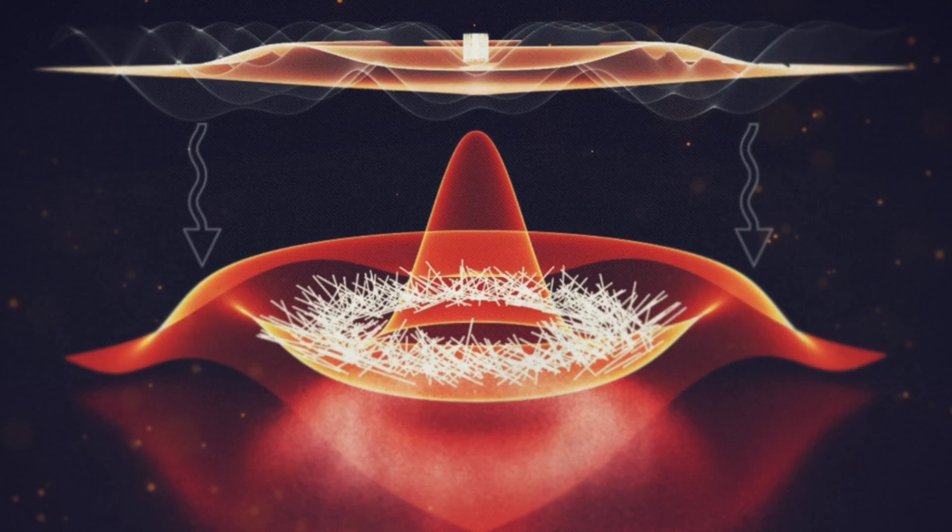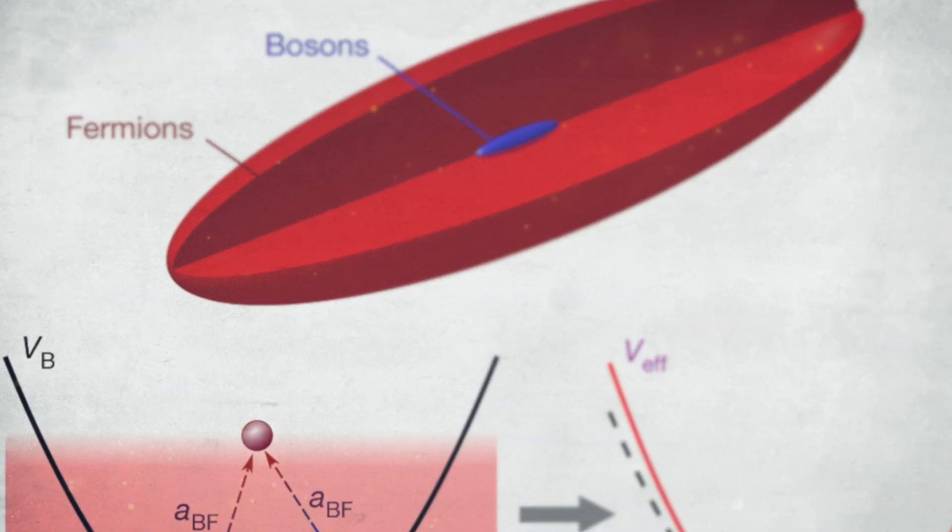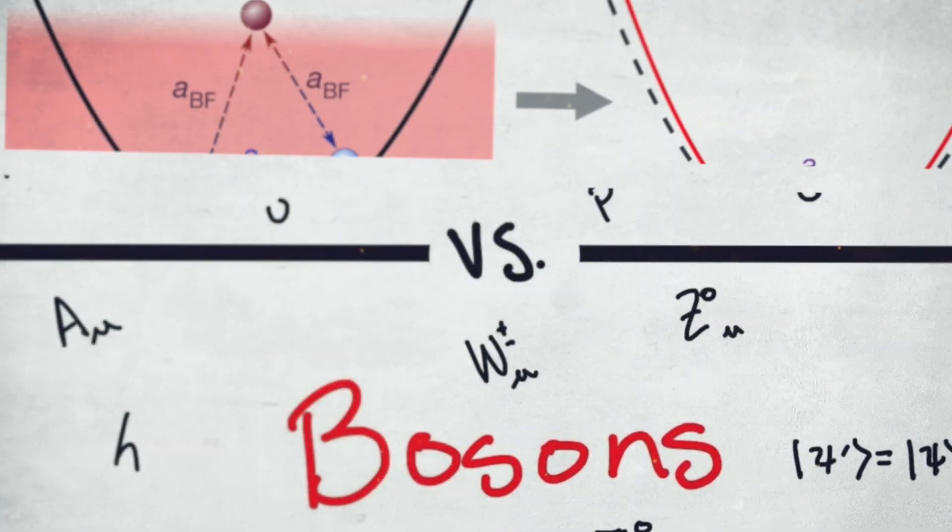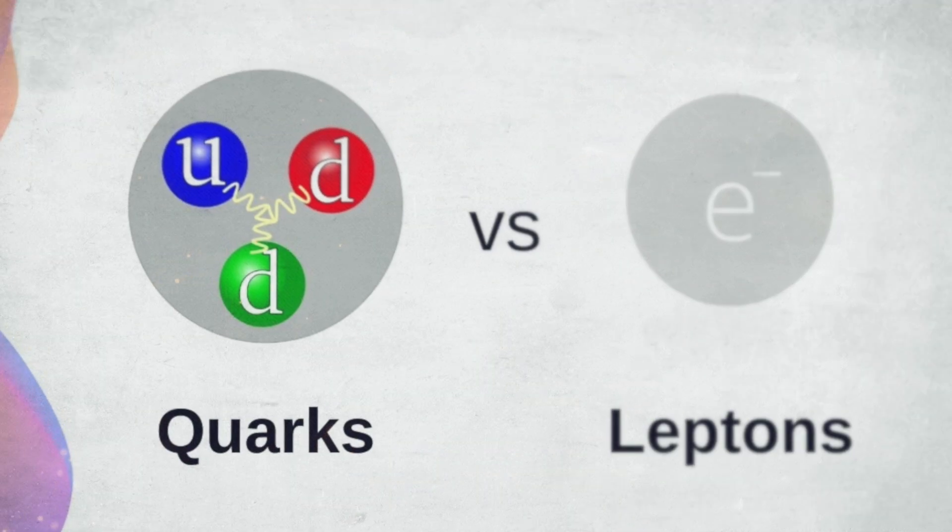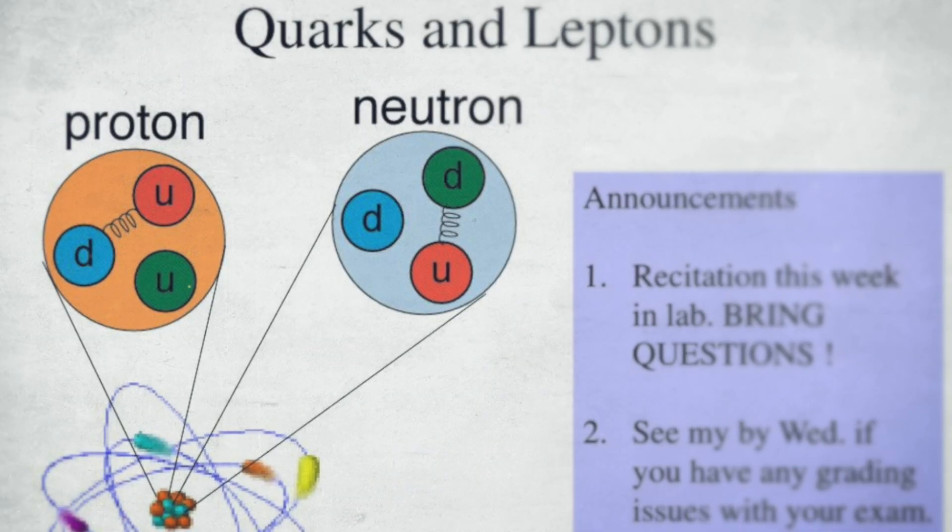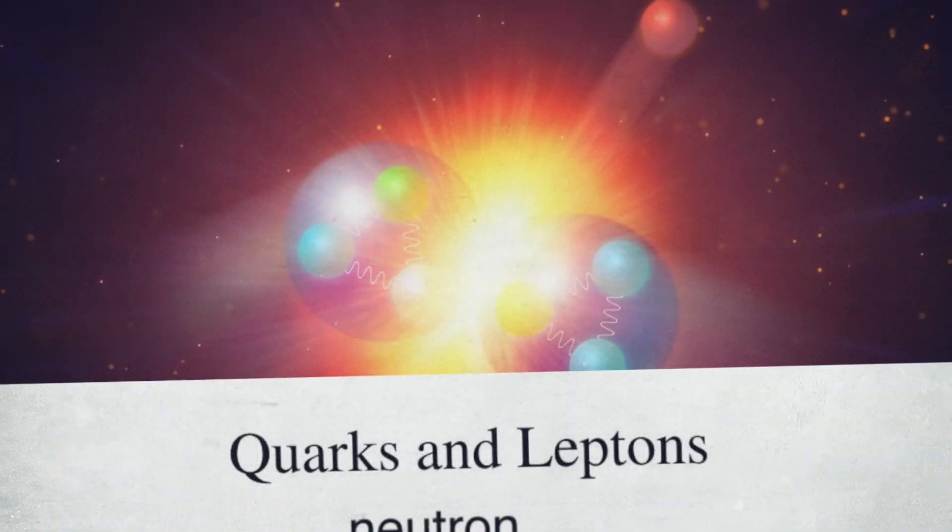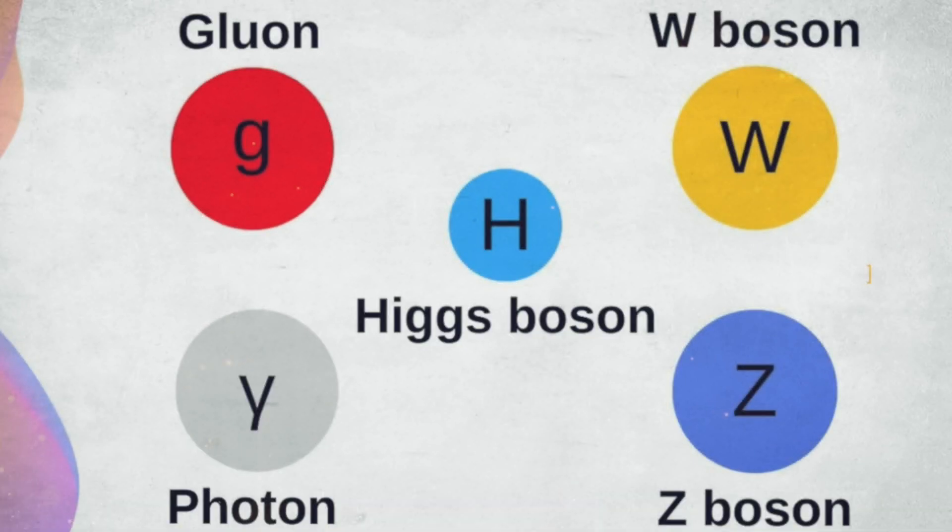Within this model, matter is composed of elementary particles categorized into two main groups: fermions and bosons. Fermions, including quarks and leptons, constitute the matter particles, while bosons, such as photons and W and Z bosons, mediate the fundamental forces.